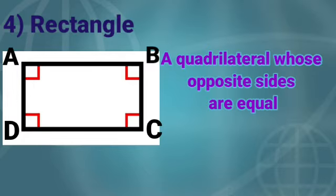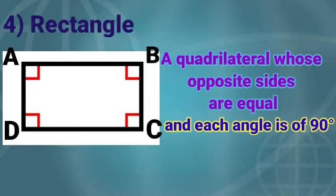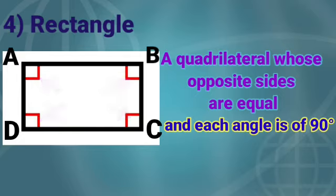A quadrilateral whose opposite sides are equal and each angle is of 90 degrees is called a rectangle. Here we can see AB equals DC, and AD equals BC. So opposite sides are equal and all the angles are of 90 degrees.